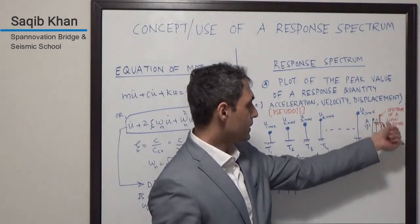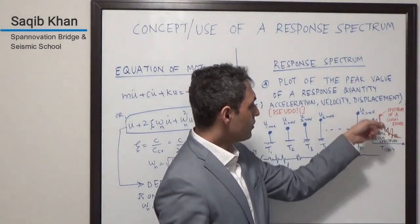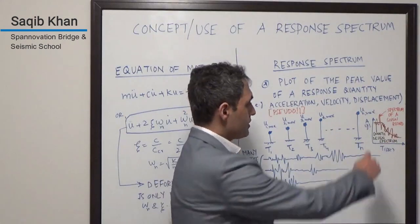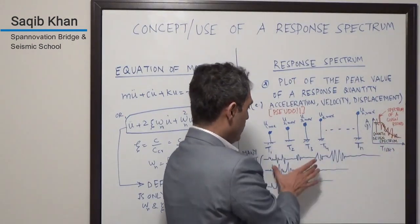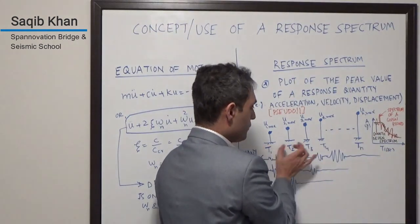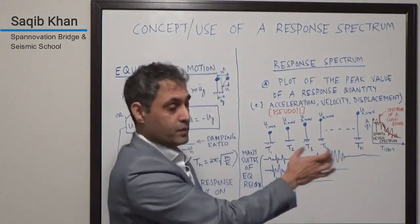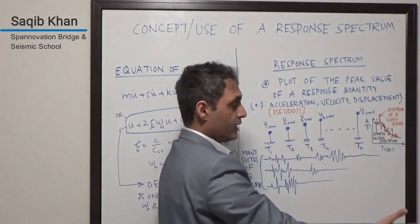But if I look at a typical spectrum for a given record, it's going to look very jagged. This is the type of response we get when we run one earthquake through different systems with different time periods. Each one of them gives you a different value.